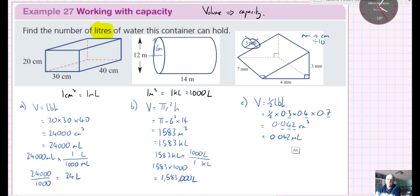So 0.042 divided by 1,000 gives me 0.000, that's the divided by 1,000 part, and then the 0.042, and that'll be in liters.